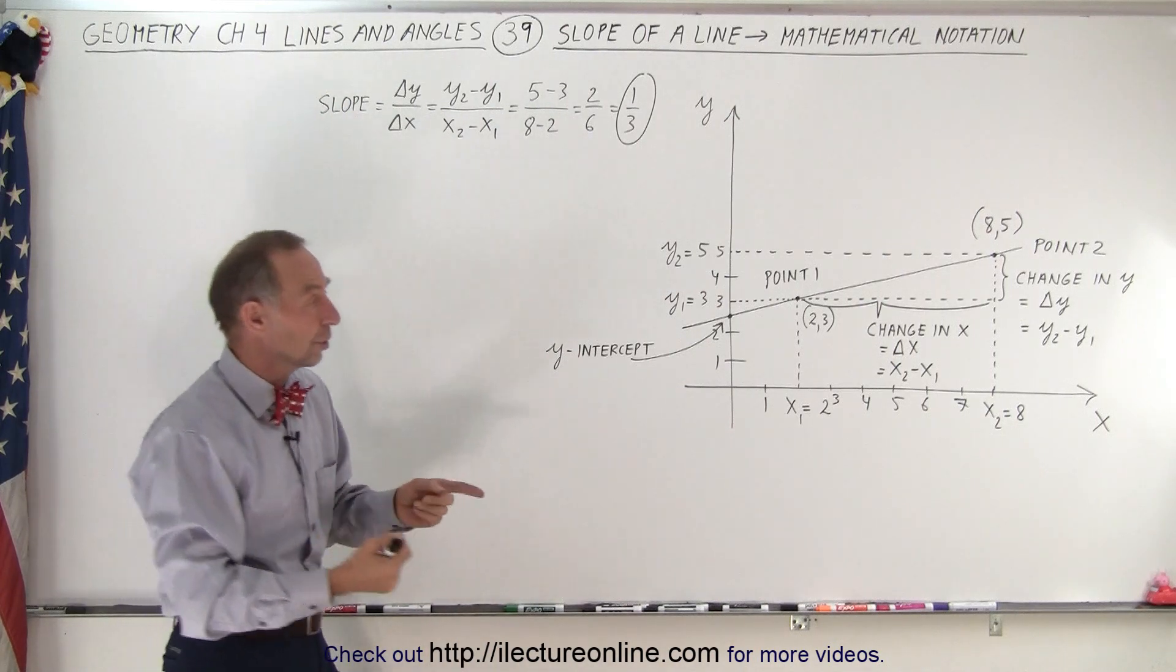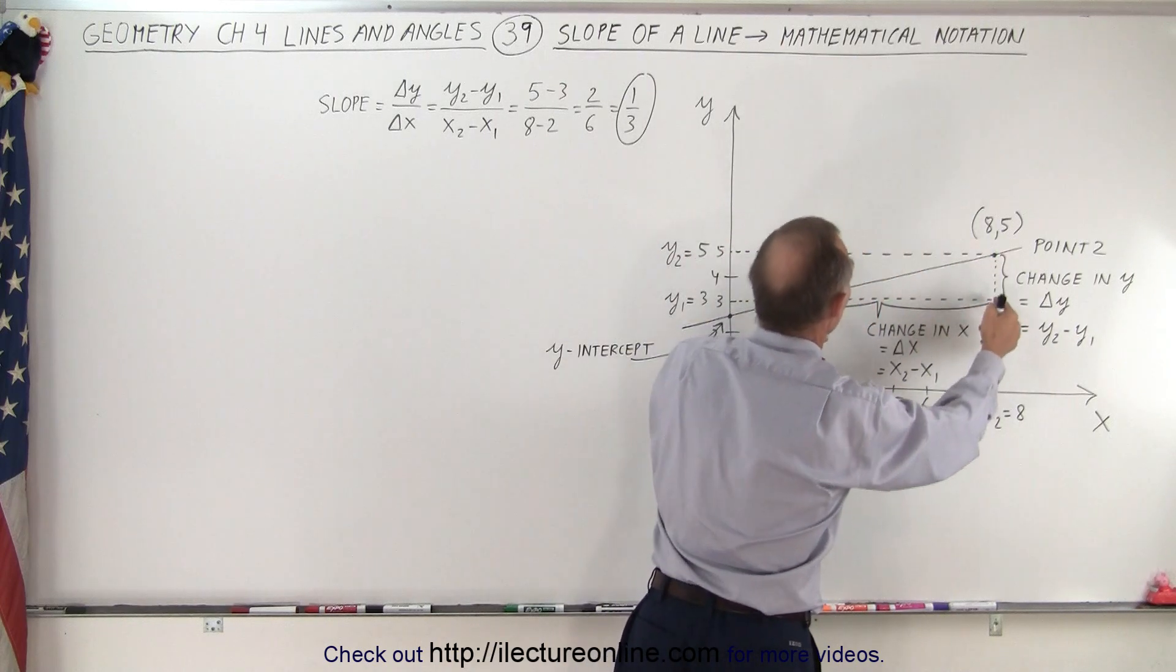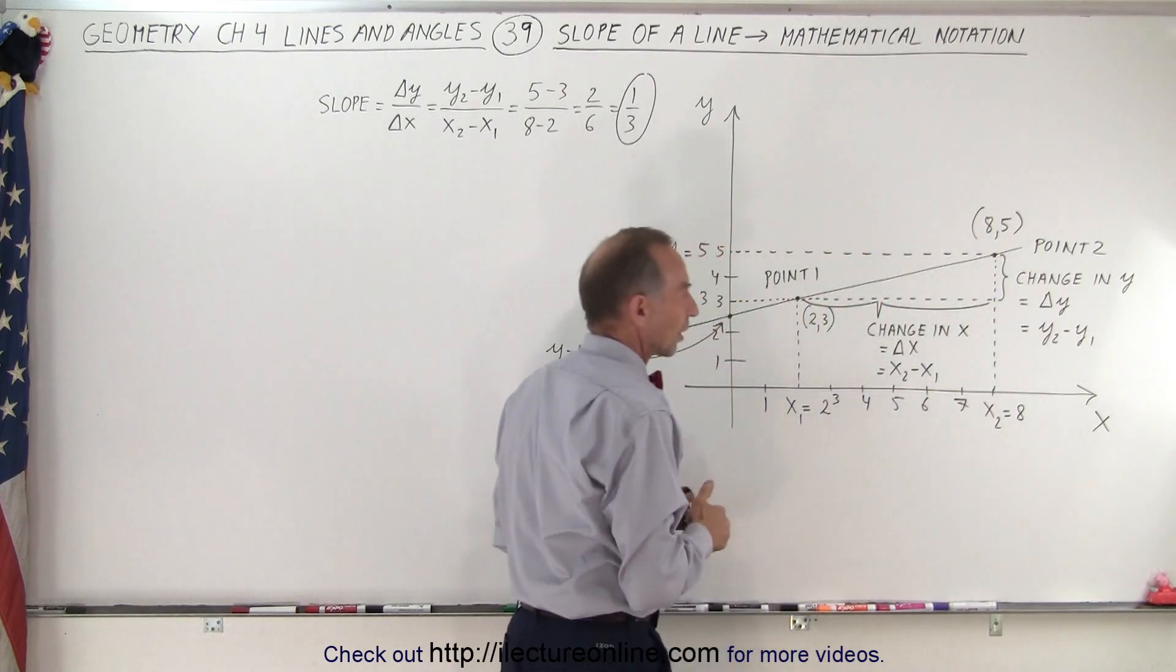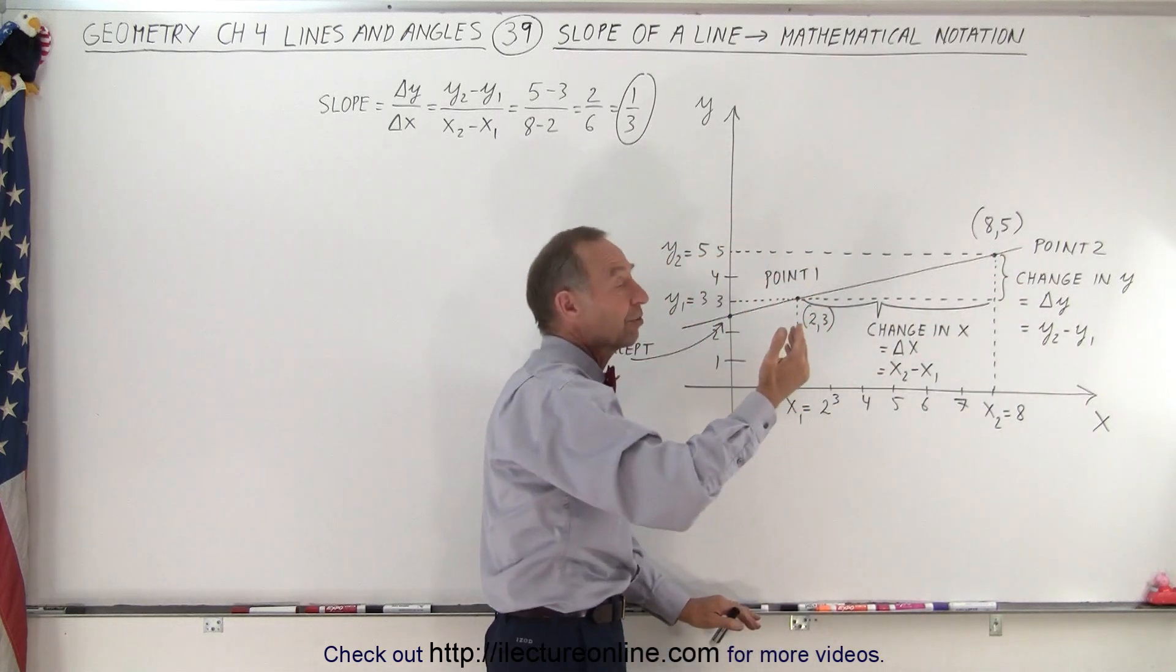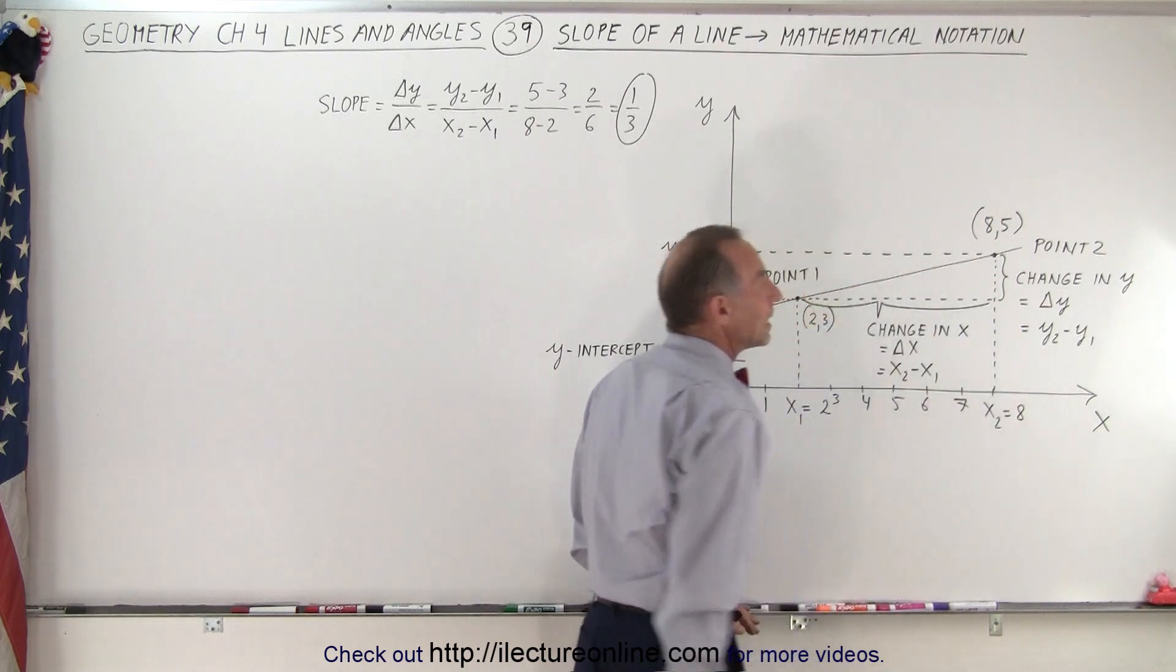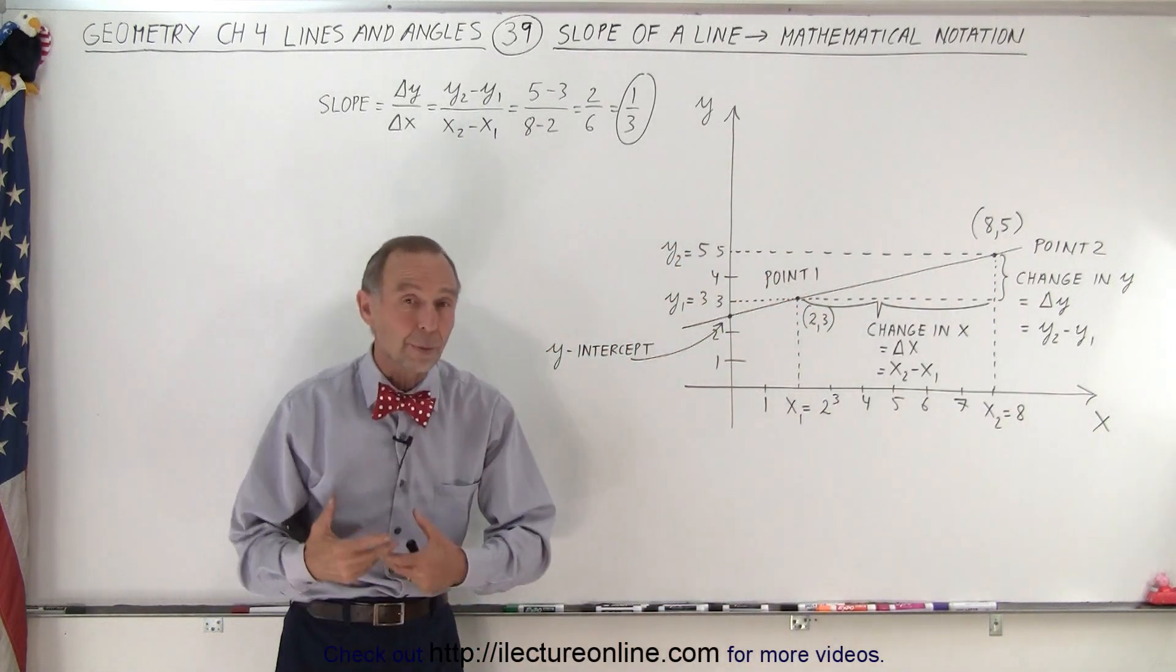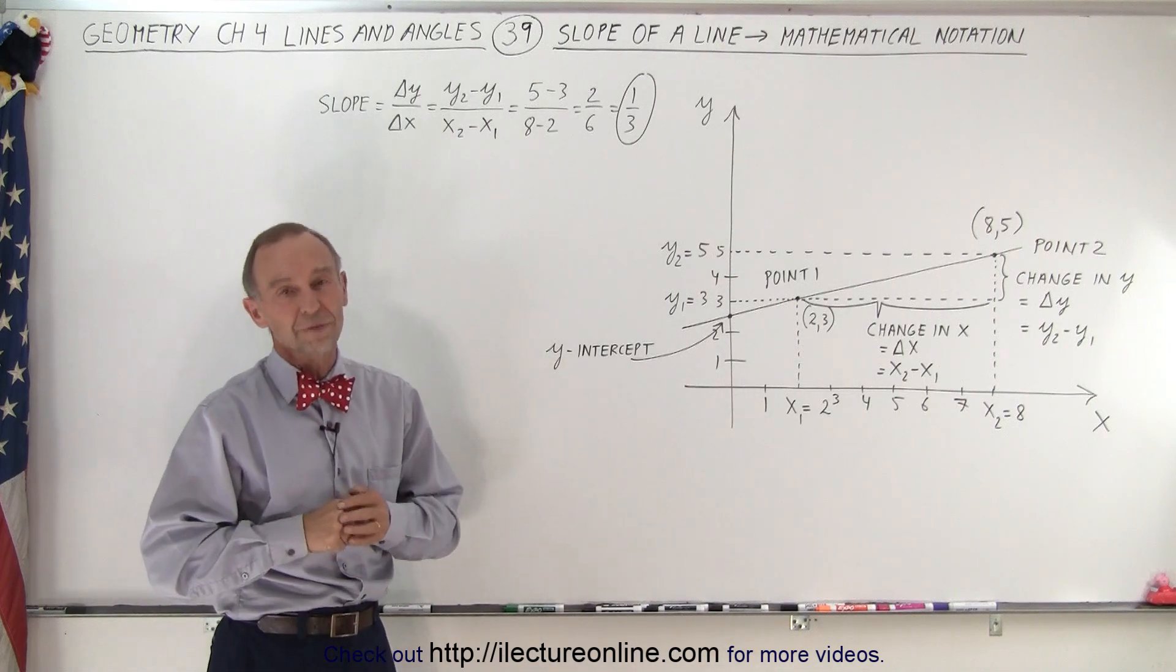And again, it's simply the ratio of the distance traveled in the y-direction divided by the distance traveled in the x-direction. Since the change in the y-direction is upward, it's a positive slope. If the change in the y-direction had been downward, it would have been a negative slope. And that's how we mathematically define the concept of the slope of a line.